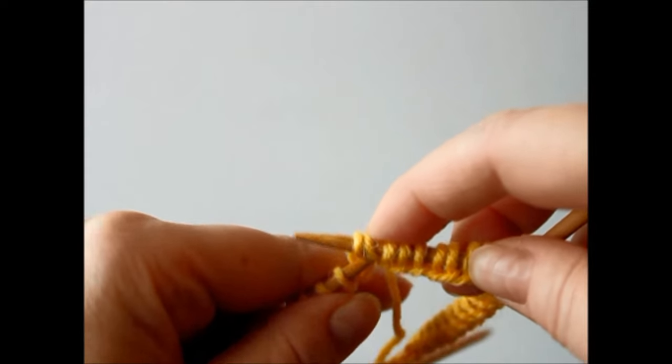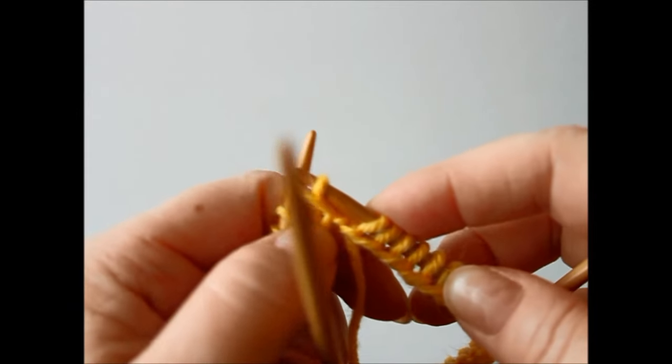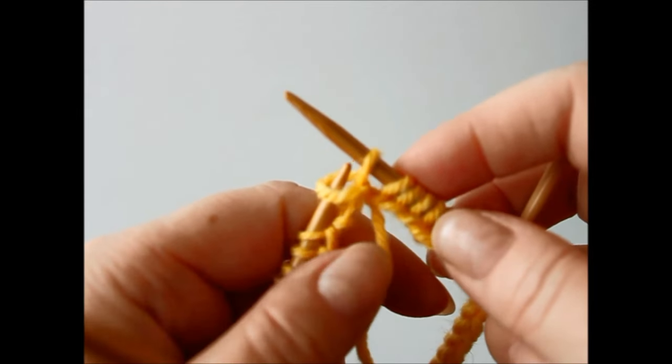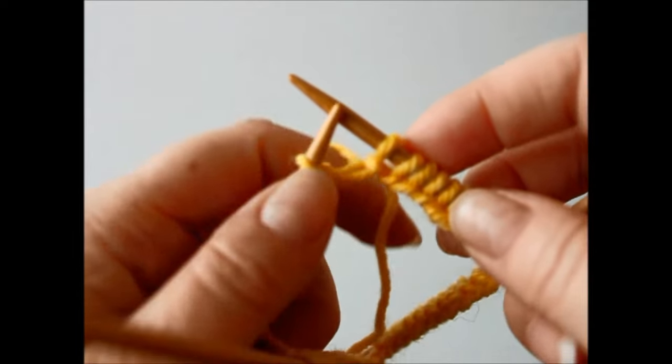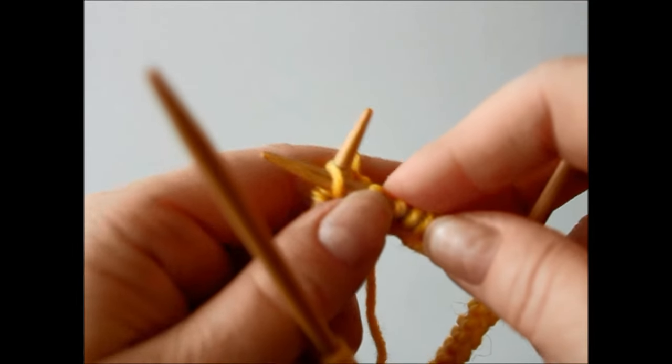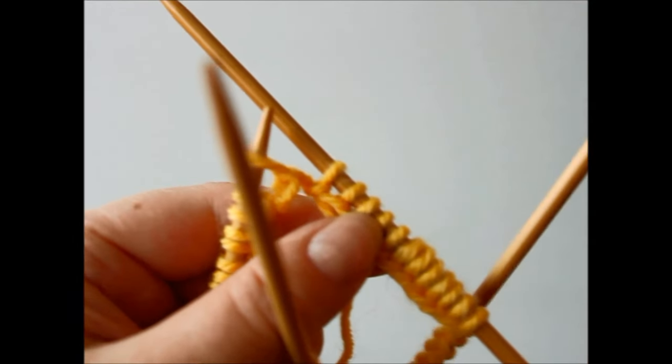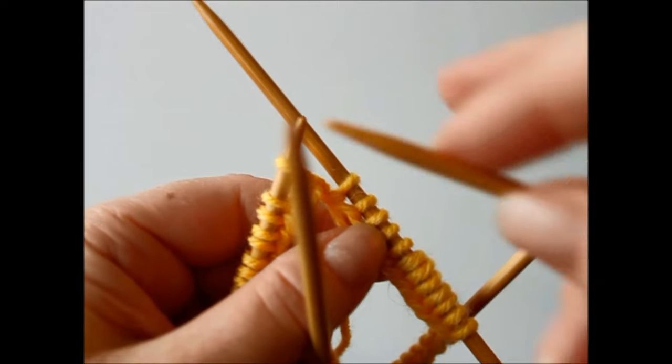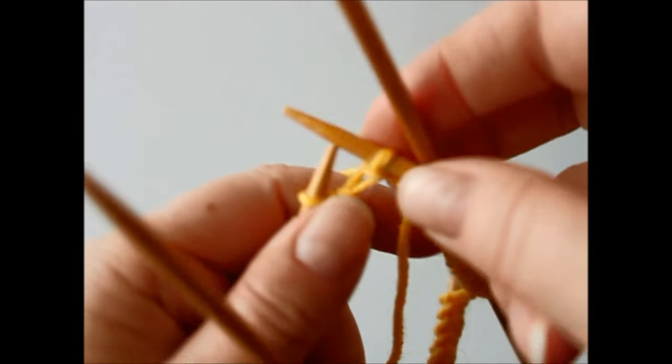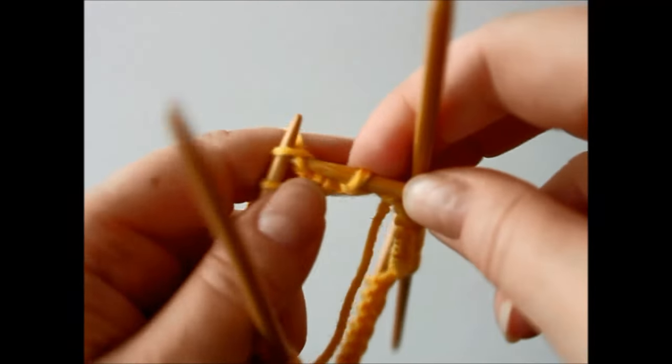After knitting it I pass the other stitch over and put it back on the left-hand needle. So now they all have 12 stitches again and then I just continue knitting round normally.